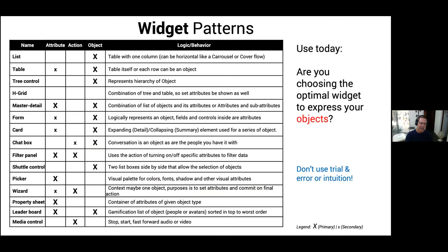Widgets: we have this bucket of very common widgets like tables, forms, cards, filter panels, and property sheets. Most of these in the end are starting to represent objects; some are still just a bunch of attributes. Don't use trial and error — take at least half the X's out when you're creating a design system — but you need to be hyper consistent. It doesn't have to be the same object in every list, but a list should be a list of objects, not a list of actions or a list of attributes.